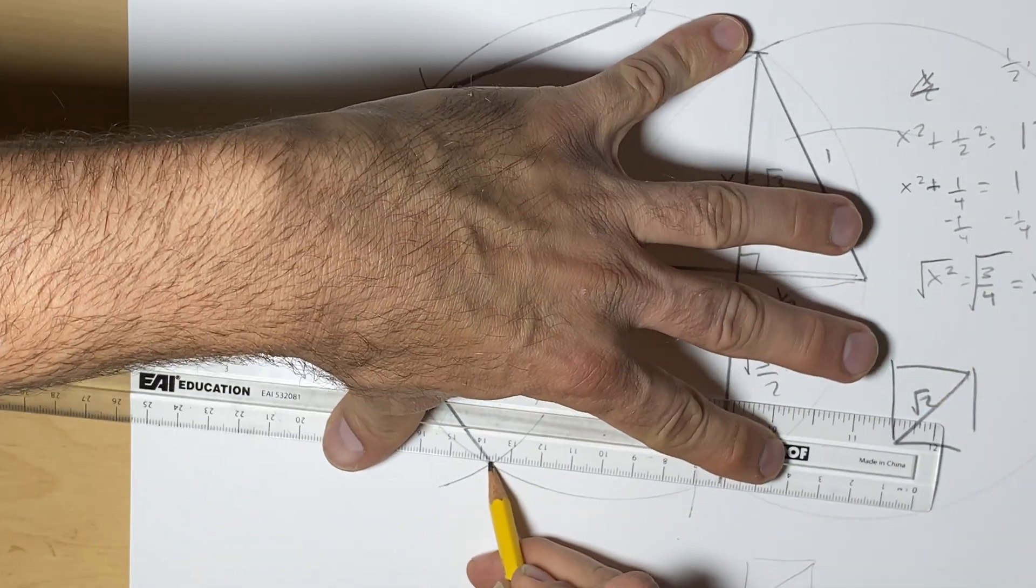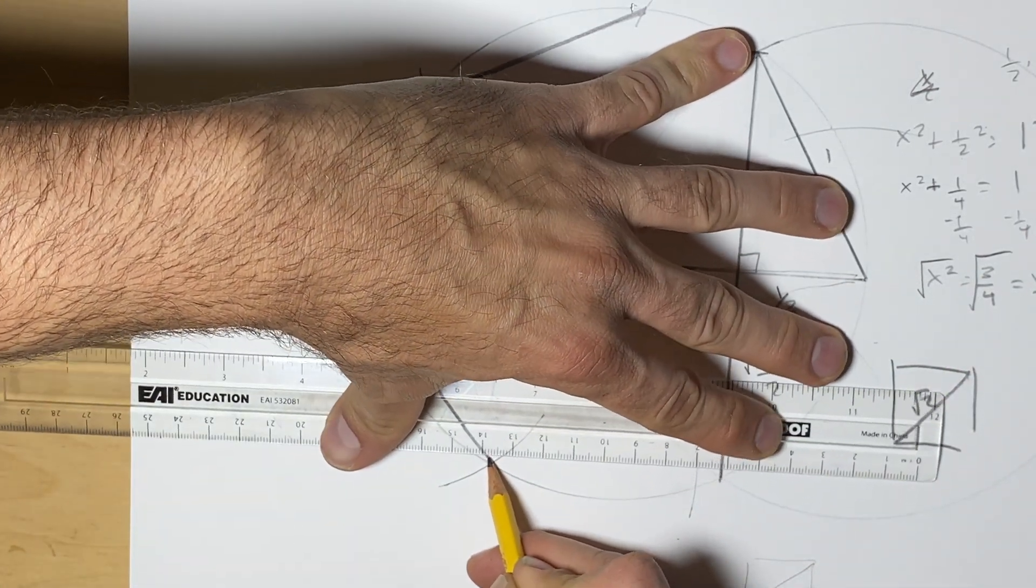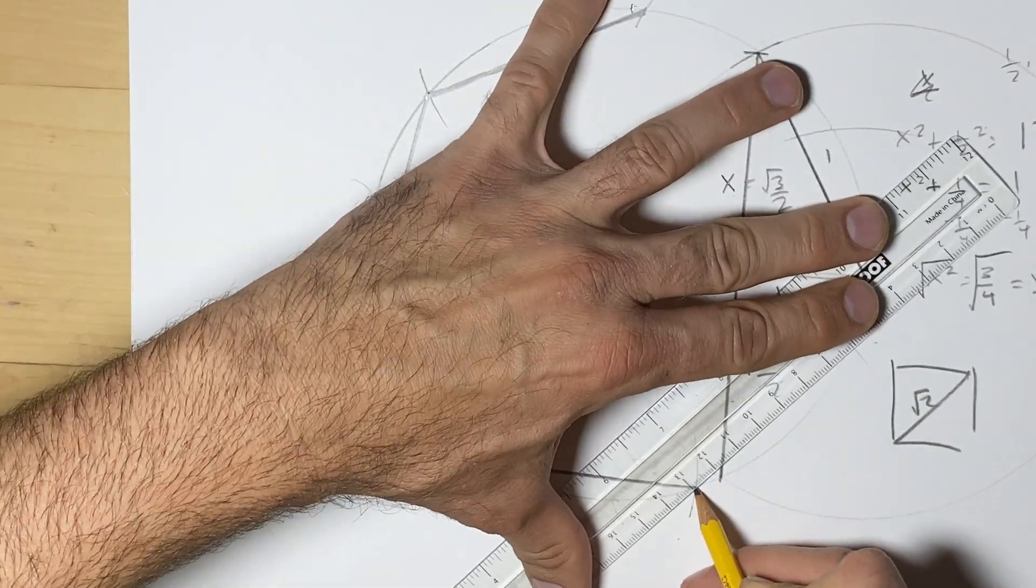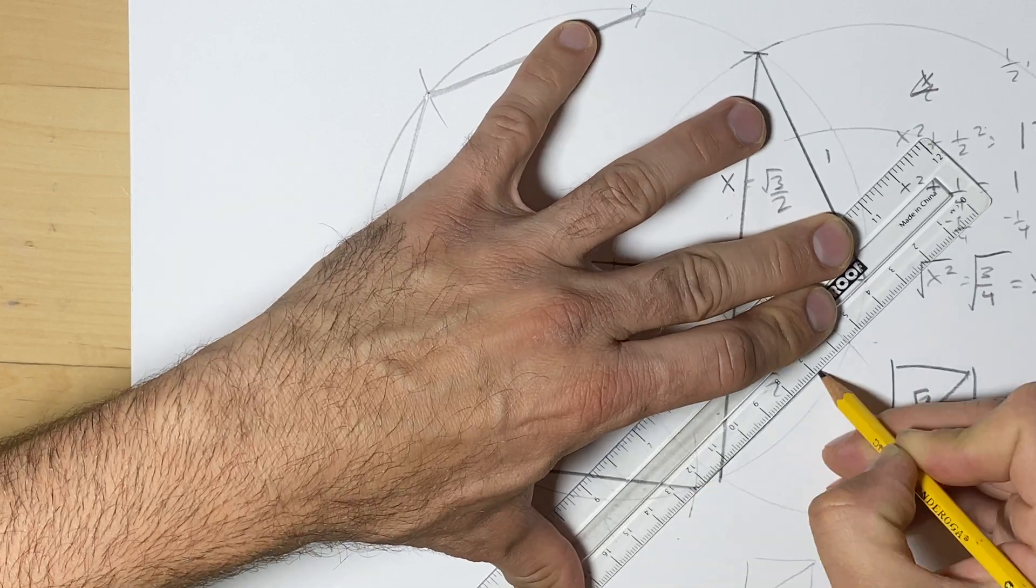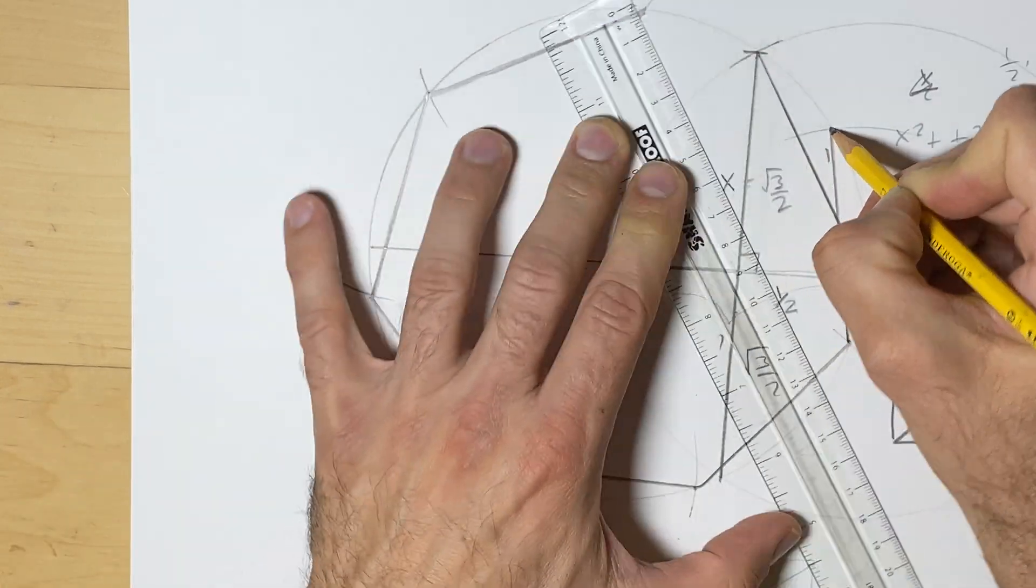So this tells us that the sides of this heptagon, or septagon depending on what you're going to call it, are going to be √3/2.